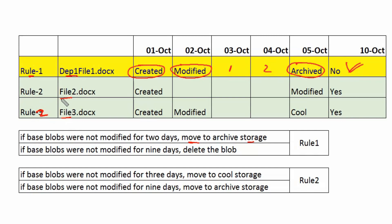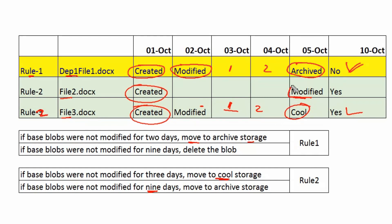For file 2 and file 3, rule 2 is applicable. File 3 was created on October 1st and modified on October 2nd. After three days it was moved to cool storage, and since nine days have not completed from October 5th, the file is accessible in cool storage — so yes for file 3. File 2 was modified on October 5th, and nine days have not completed for file 2 either, so it remains in cool storage and is accessible.